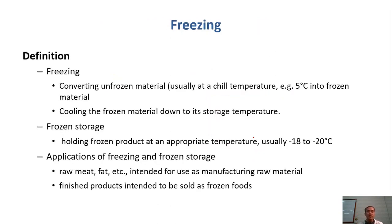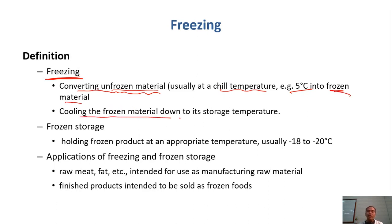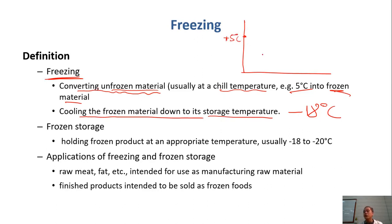Freezing: the first step is you convert unfrozen material — usually already chilled — into frozen material. Normally the material is lowered to around 5 degrees C before freezing. After that, you cool it down further to its storage temperature, for example minus 18 degrees C. So the material begins at perhaps 5 degrees C, already chilled, and you lower it, convert it to frozen, then reduce the temperature further to frozen storage.